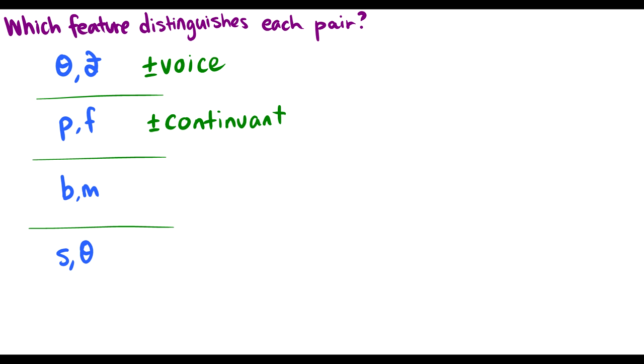What about buh and mm? Well, buh and mm, they're both made in the same place. They're both voiced. But one is a nasal, and one is not. So the difference must be plus or minus nasal. What about s and th? Well, s and th. They're both coronal sounds. But one is noisy, and one is not. So this must be plus or minus strident.